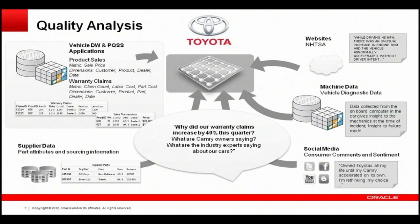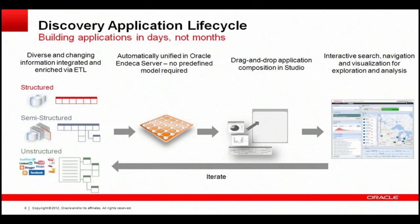Ultimately, we played a pivotal role in helping Toyota prove that there were actually no problems with their electrical systems or pedal assemblies, and we did this in a very timely fashion. Toyota's own public estimates indicate that if they had solved this with traditional business intelligence tools — creating a new warehouse with new reports, dashboards, and ETL routines — it would have taken well over a year, probably closer to 18 months, and they would likely have given up at that point.